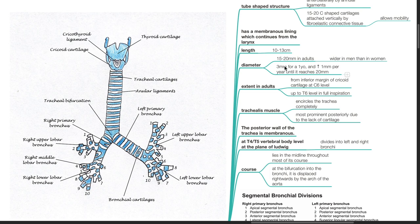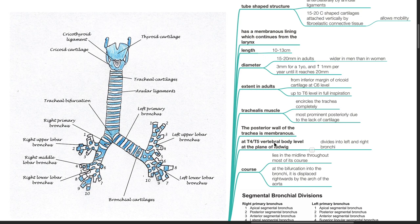The diameter is 3 mm for a one-year-old child and increases 1 mm per year until it reaches 20 mm. In adults, it extends from the inferior margin of the cricoid cartilage at the C6 level up to T6 in full inspiration. The trachealis muscle encircles the trachea completely, most prominent posteriorly due to the lack of cartilage, making the posterior wall membranous. At T4 or T5 vertebral body level, the trachea divides into the left and right bronchi, lying in the midline but displaced rightward at the bifurcation by the arch of the aorta.